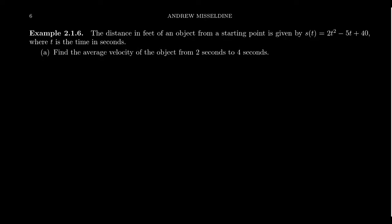The distance in feet of an object from a starting point is given by s(t) = 2t² minus 5t plus 40, where t is measured in seconds and s(t) is measured in feet. These are reasonable formulas from the application of physics — Newton's laws of motion and similar principles. This is a mathematics course, so let's just focus on the mathematical side without worrying about the origin of the equation.